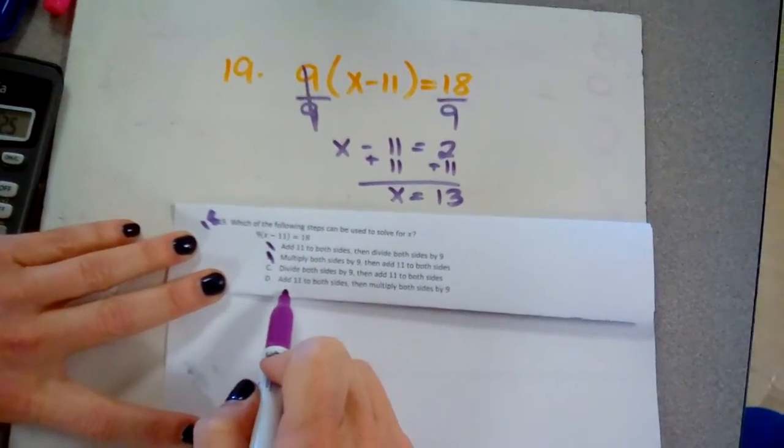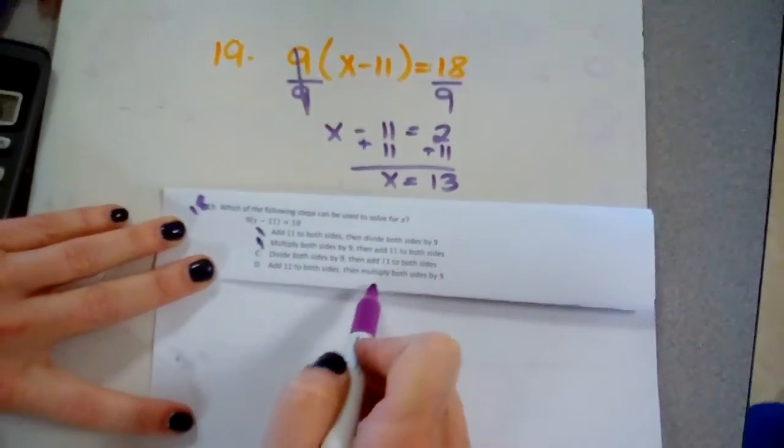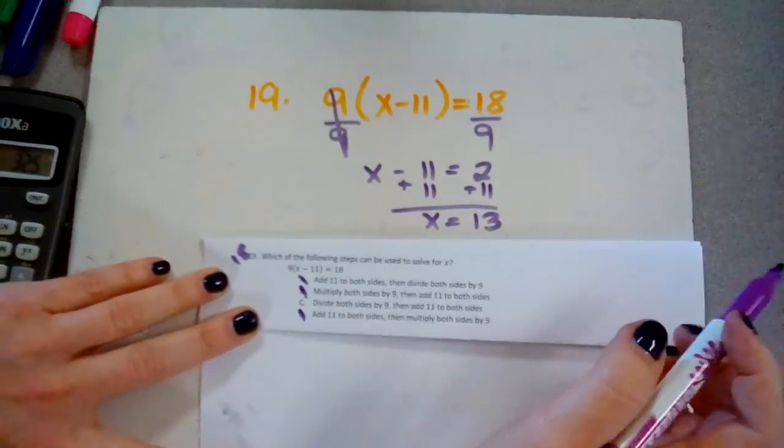We're just going to look at letter D and see if that one would work. Add 11 to both sides and then multiply both sides by 9. That one will not work because again, we cannot add 11 here.